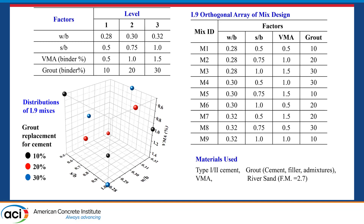For the materials, we used Portland cement and a cementitious grout as a binder, along with VMA and river sand. This cementitious grout is commercially available. The reason we used this grout to replace cement is that it contains a certain amount of accelerator and superplasticizer, which allows us to save time adjusting the dosage of each material to achieve proper rheological properties.